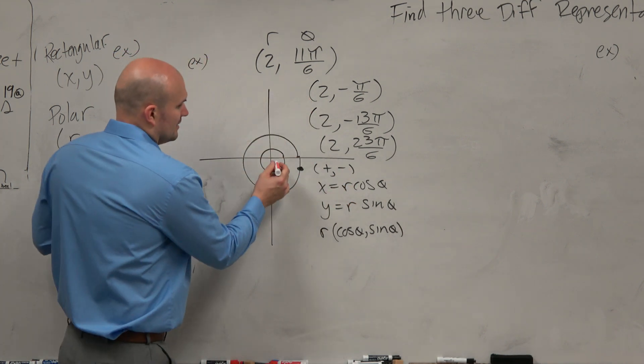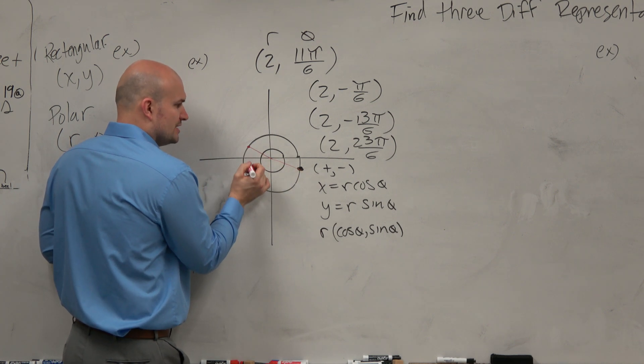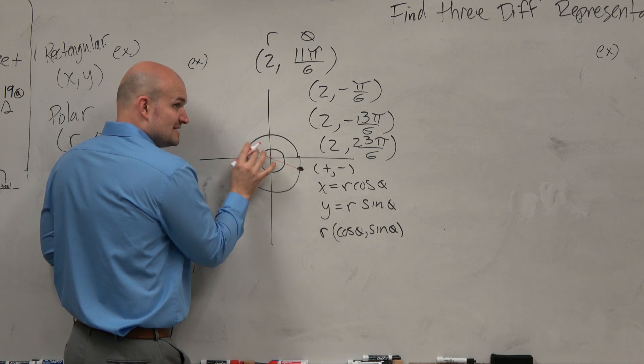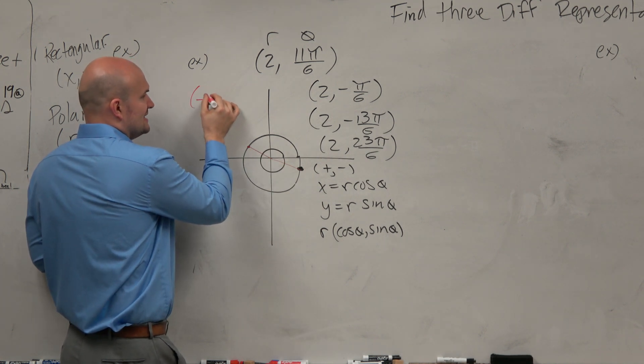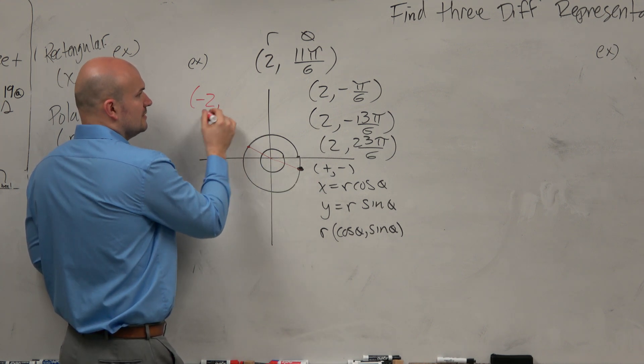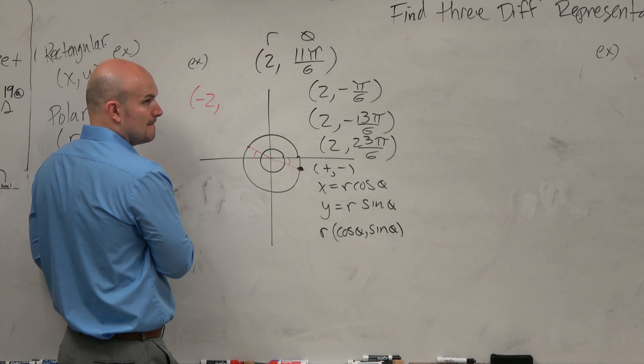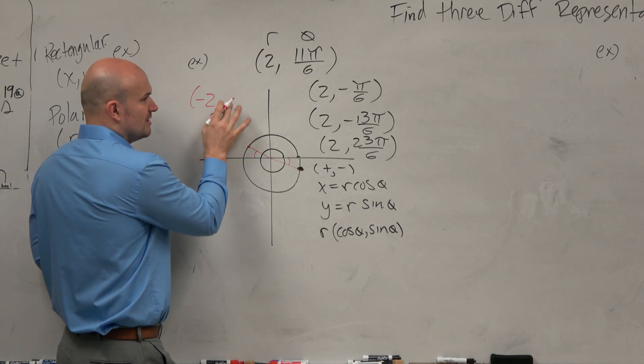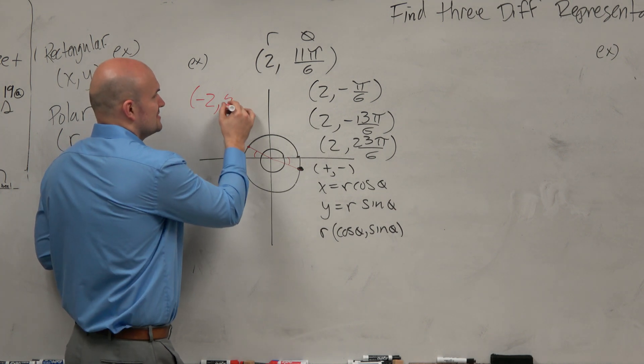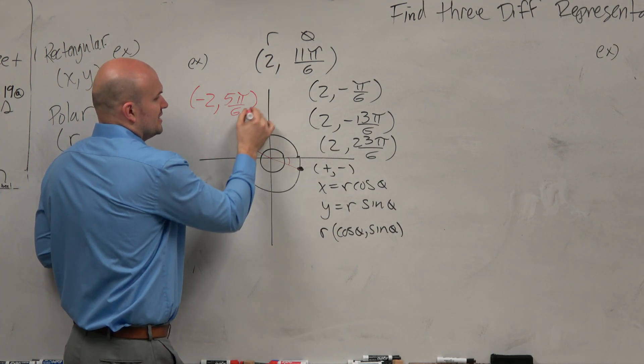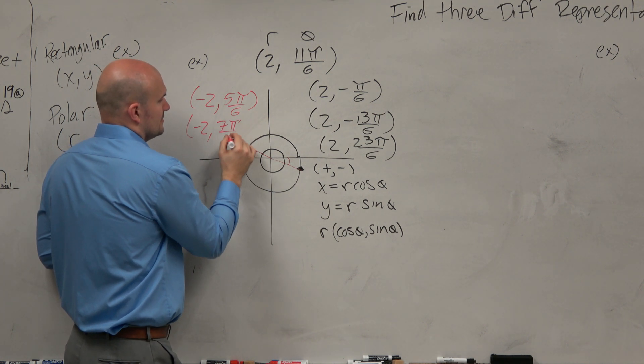So here, here is like your point. If you do the reflection about the origin, the reference angle is still the same. But now we can represent this as a negative 2 because it's being reflected across. And then what would this angle be? It still has the same reference angle, which is π over 6. So what's one representation for this? 5π over 6. Could you do a negative one? Yes. 7π over 6? Yes. Okay.